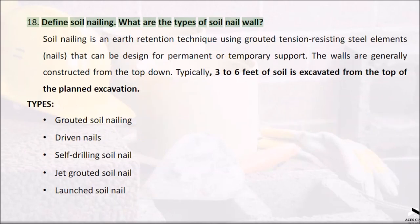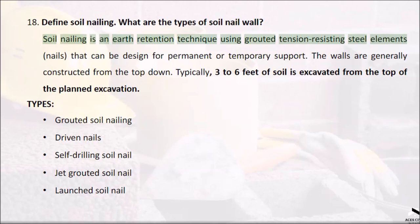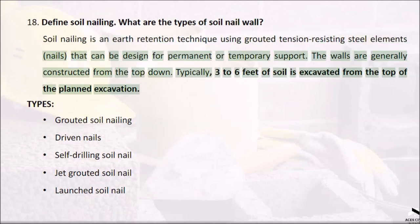Question 18: Define soil nailing. What are the types of soil nail wall? Soil nailing is an earth retention technique using grouted tension-resisting steel elements called nails that can be designed for permanent or temporary support. The walls are generally constructed from the top down. Typically three to six feet of soil is excavated from the top of the planned excavation.